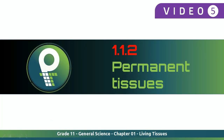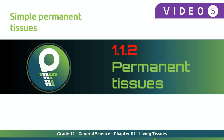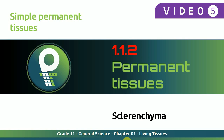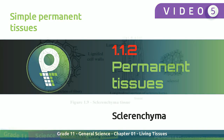We have been learning about Permanent Tissue, and under that we are categorizing and learning about Simple Permanent Tissue. We were talking about two others — Parenchyma and Collenchyma. Now the third type, Sclerenchyma Tissue, is what we are going to talk about today.